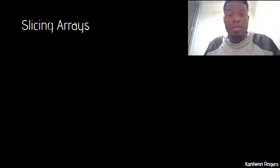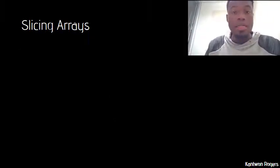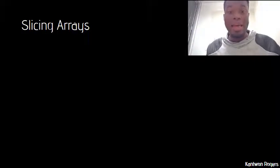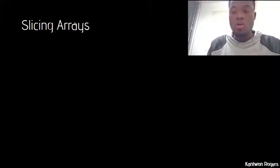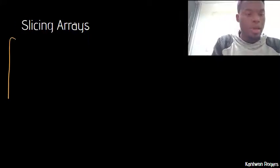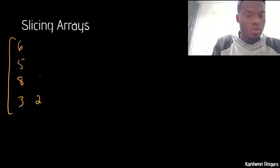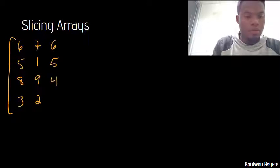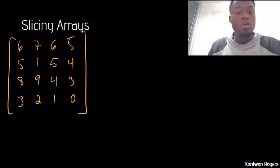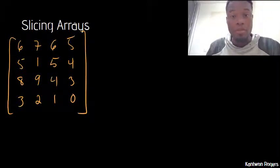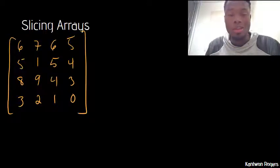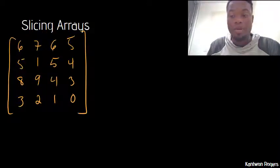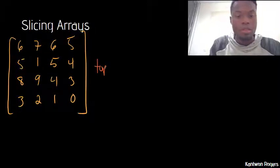An important concept with indexing arrays using the row and column method is called slicing — just taking out large chunks of the array. Say I have an array that's 6, 5, 8, 3, 2, 9, 1, 7, 6, 5, 4, 1, 0, 3, 4, 5 and I want to take out the top half. I'm going to slice out the top half — this is all just indexing.